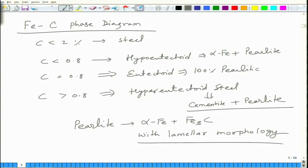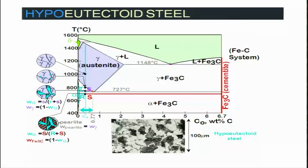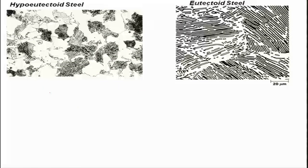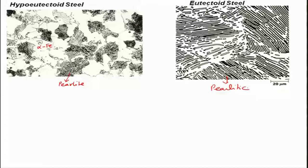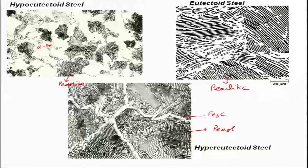Let me show you pictures. In the hypo-eutectoid steel on the left you can see alpha Fe grains and pearlite. The completely pearlitic microstructure shows 100 percent pearlite. In the hyper-eutectoid steel you can see Fe3C and pearlite.